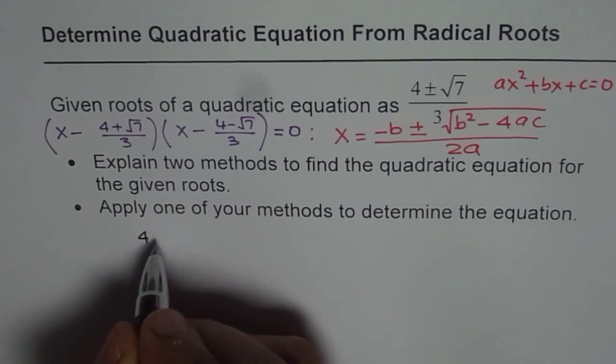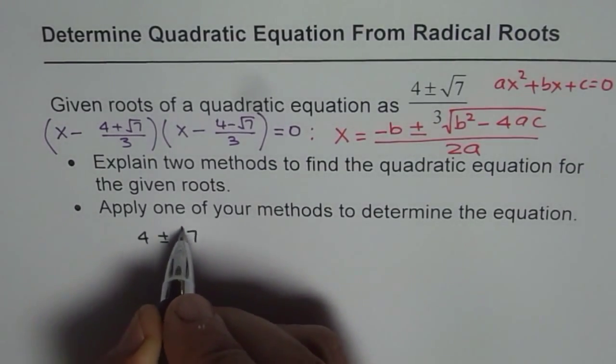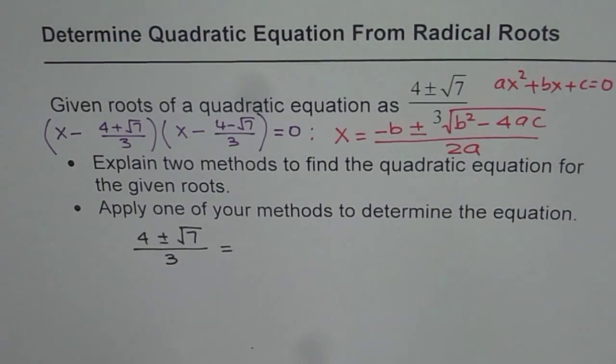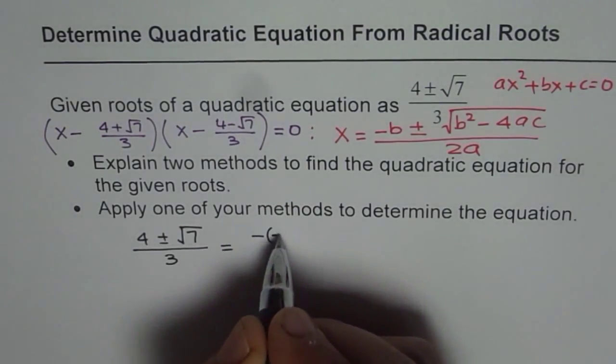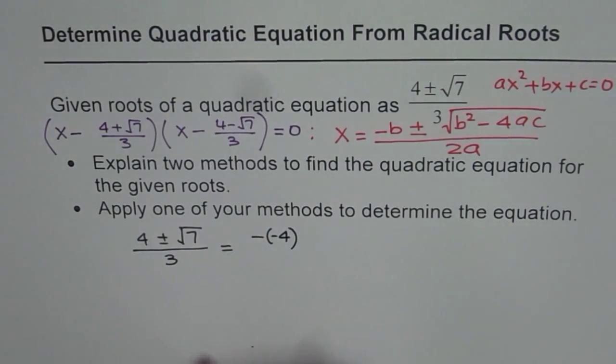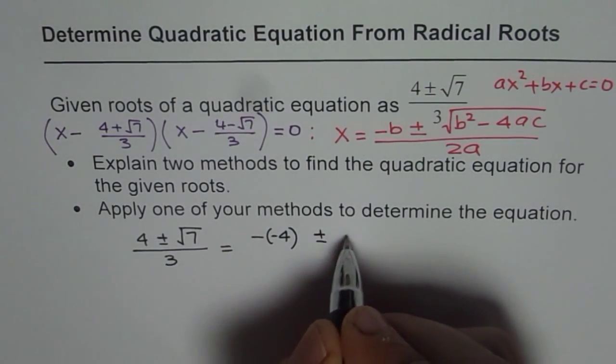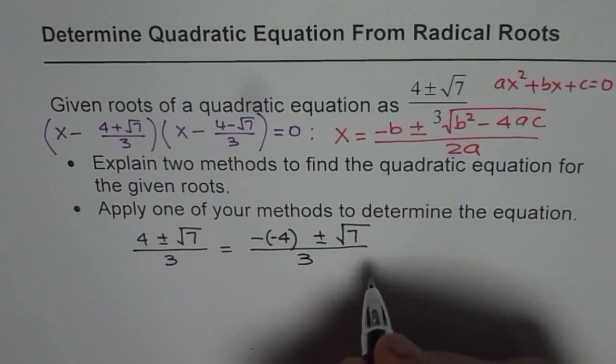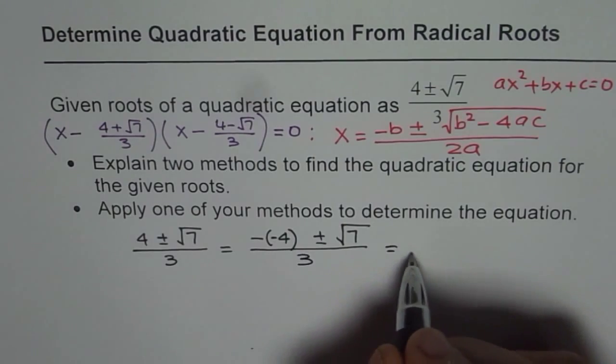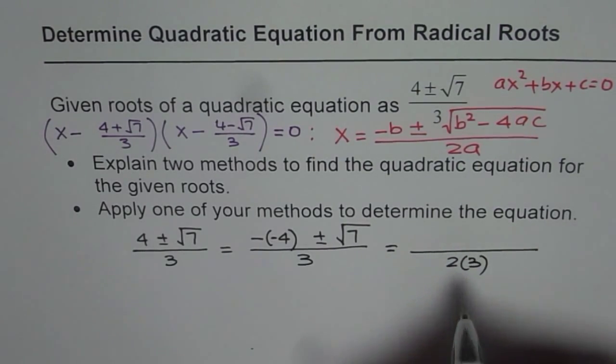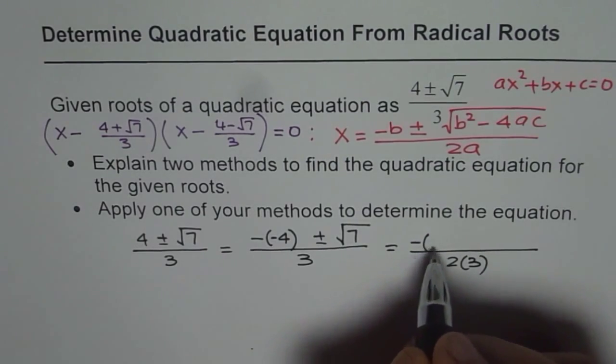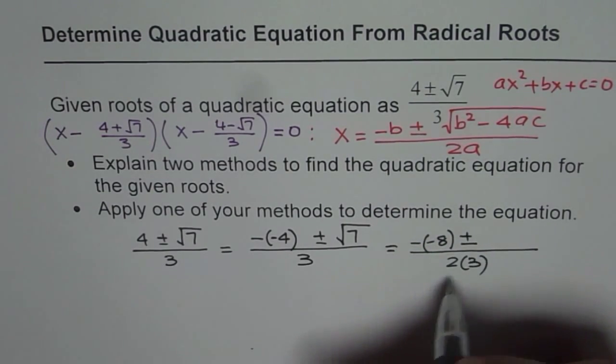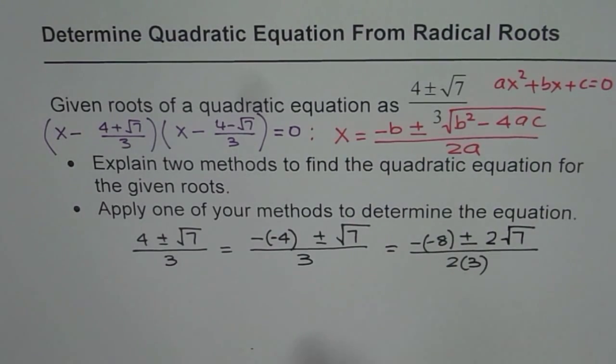The root given to us is 4 plus minus square root of 7 divided by 3. We have 2a here and minus b there. So I can write the first term as minus of minus 4, and this as plus minus square root of 7 divided by 3. But in the denominator I need 2 times a. So let me multiply both by 2. I can write this as 2 times 3, and the numerator as minus of 2 times minus 4 will be minus 8 plus and minus 2 times square root of 7.